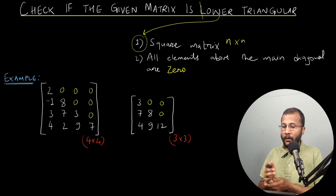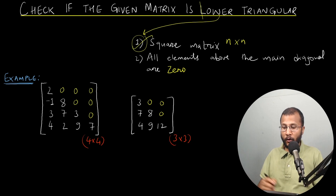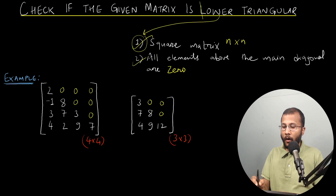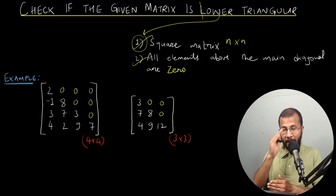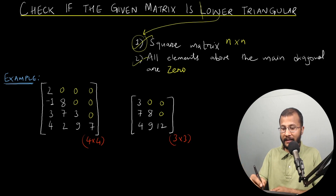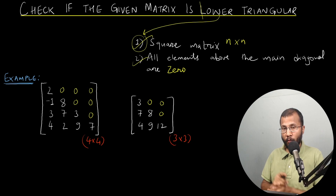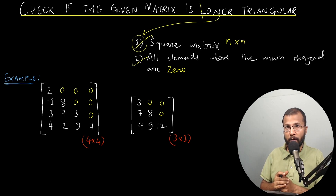That's the first condition for a matrix to be lower triangular — it should be a square matrix. The second condition is all the elements above the main diagonal must be zero. If both of these properties are satisfied, we say that the matrix is lower triangular.